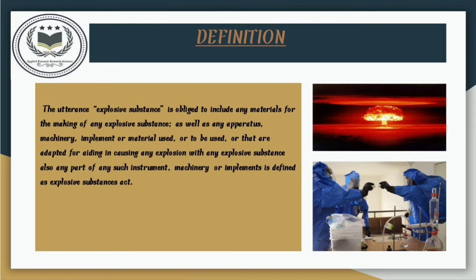In plain terms, any material used for making any explosive substance, as well as ones adapted to cause an explosion with the help of an explosive substance, or any part of an instrument or machinery, is defined under the Explosive Substances Act.